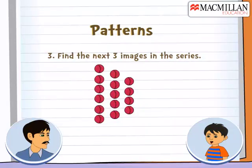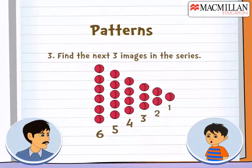The third is the question of decreasing pattern. The first image in the question has six balls. The second one has five balls and third one has four balls. So, the next three images will be of three balls, then two and then one ball. Very easy.